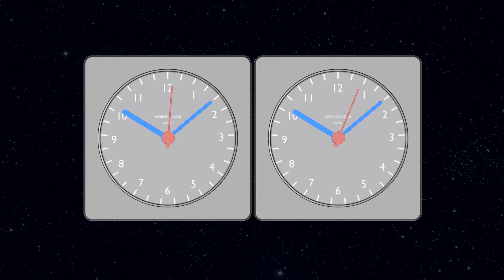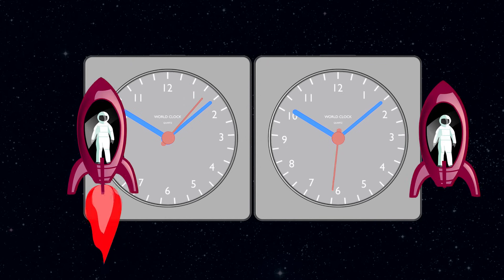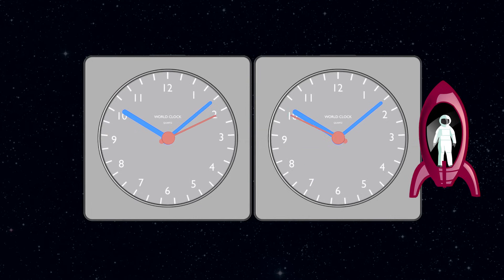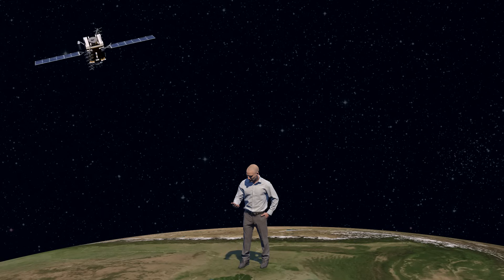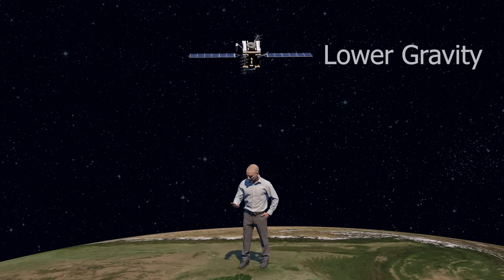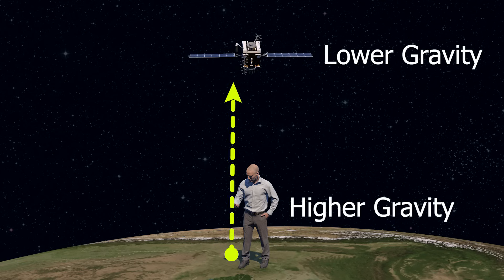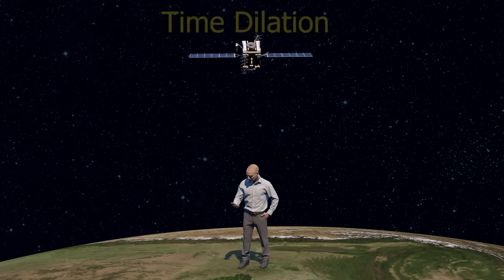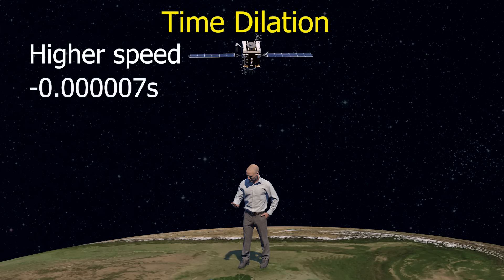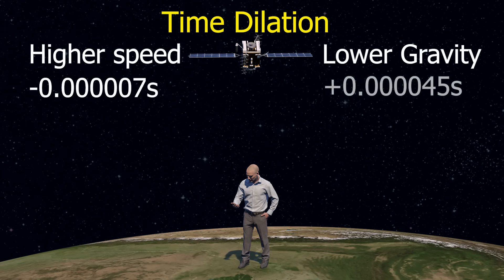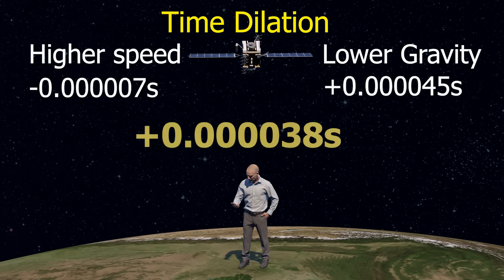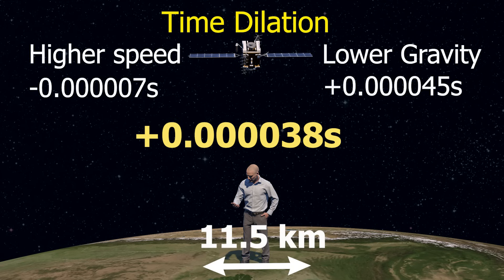There are more things to take care of. The theory of relativity says that the passage of time is different for two objects if they have relative speed or if they are subjected to different gravities — and both conditions are applicable to all satellites. The satellites move very fast compared to the receiver, so there is relative speed. The gravity on the satellite is lesser compared to the receiver since gravity reduces with height. The higher speed makes satellite clocks slower by 7 microseconds per day, and lower gravity makes them faster by 45 microseconds per day. The net effect is that the satellite clocks run faster by 38 microseconds per day. If unaccounted for, this will induce an error of 11.5 km per day in position.